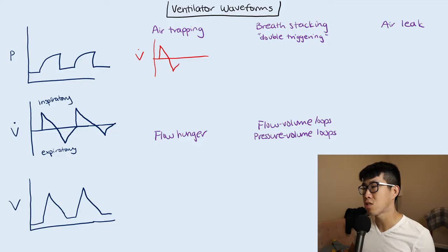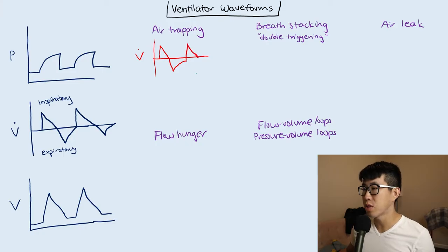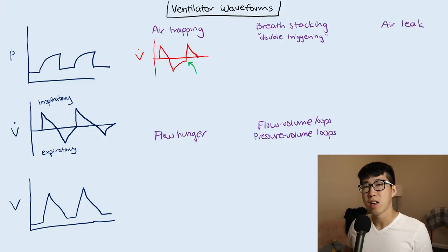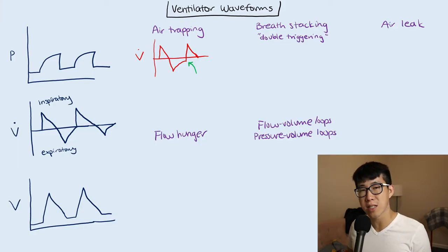But before the flow gets all the way back to baseline, you already have the next inspiration. The key thing to look at is that you do not have a return to baseline in your flow before the next breath initiates. Typically, this is going to be in your patients with severe emphysema, COPD, or asthma.